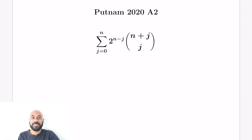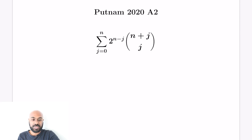In today's video, we're going to look at Putnam 2020, the recent Putnam, number A2, which was a suggestion from one of the viewers of the channel. It asks to figure out a formula for the sum j equals 0 to n of 2 to the n minus j times n plus j choose j. We're going to look at two different solutions: one using binomials, another using power series in a really interesting and clever way.